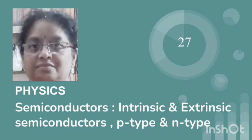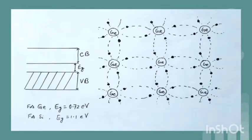Both of them have four valence electrons. An atom of silicon or germanium forms four covalent bonds by sharing electrons of neighboring four atoms, as you can see in the diagram. You can see there is no free electron. At zero Kelvin the valence band is completely filled but the conduction band is empty as there is no free electron for conduction.